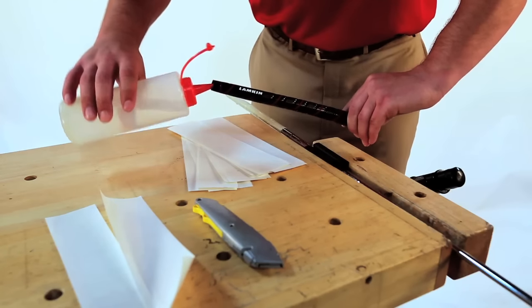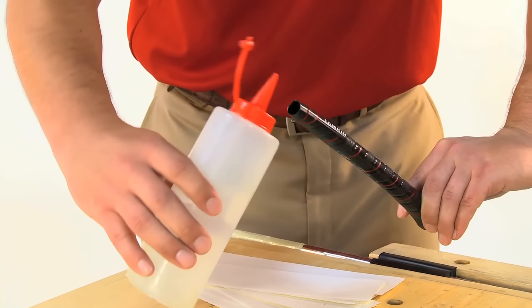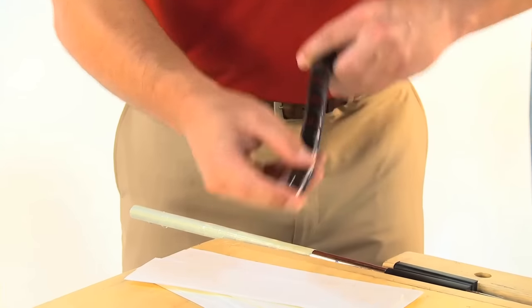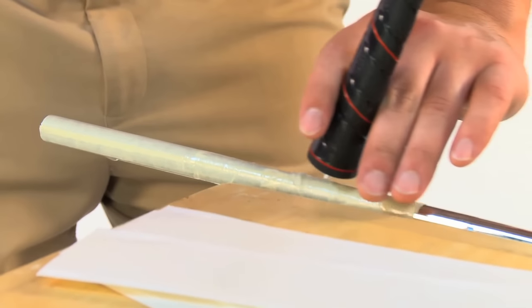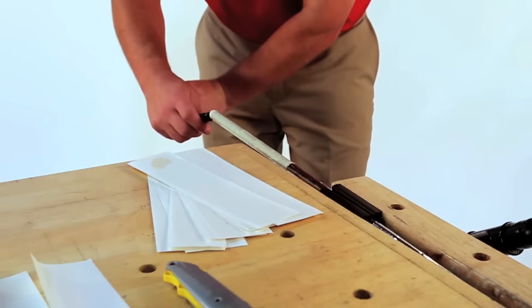Using the water bottle, squeeze a generous amount of water inside the tip of the grip. Make sure you place your thumb over the hole in the grip cap. Holding both ends of the grip, shake the water inside. Then, holding the grip over the shaft, release your thumb and completely coat the grip tape.